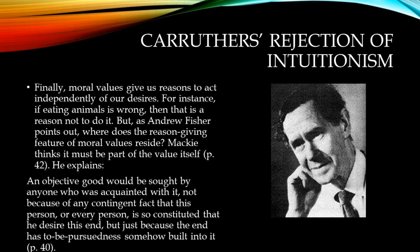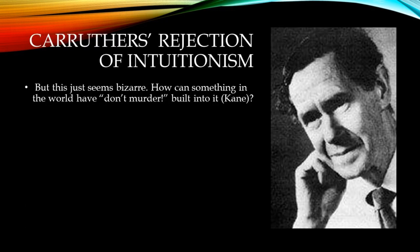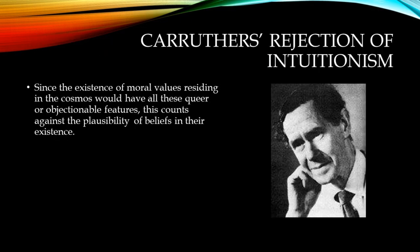Finally, moral values give us reasons to act independently of our desires. For instance, if eating animals is wrong, then that is a reason not to do it. But as Andrew Fisher points out, where does the reason-giving feature of moral values reside? Mackie thinks it must be part of the value itself. He explains: 'An objective would be sought by anyone who is acquainted with it, not because of any contingent fact that this person, or every person, is so constituted that he desired this end, but just because the end has to be pursued and is somehow built into it.' But this just seems bizarre — how can something in the world have 'don't murder' built into it? Since the existence of moral values residing in the cosmos would have all these queer or objectionable features, this counts against the plausibility of belief in their existence.